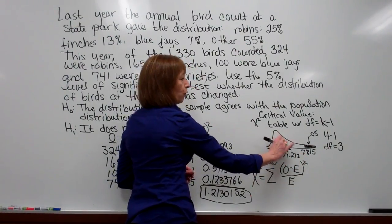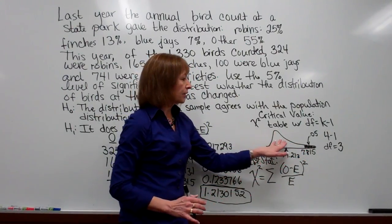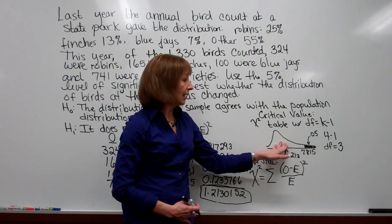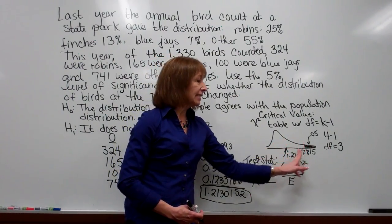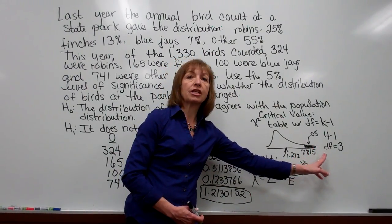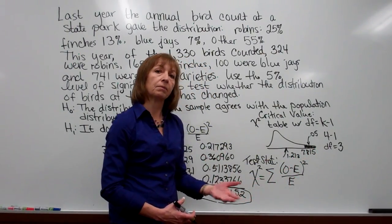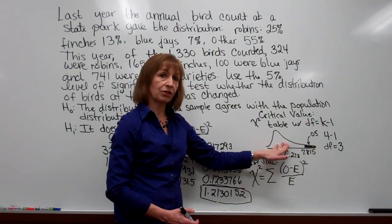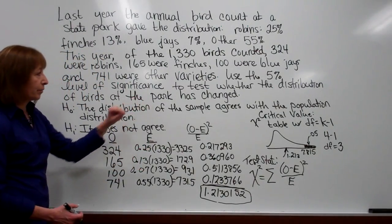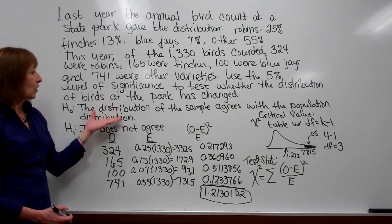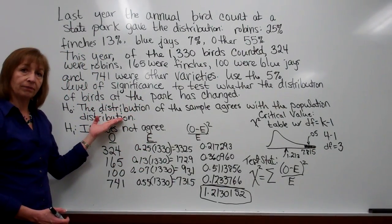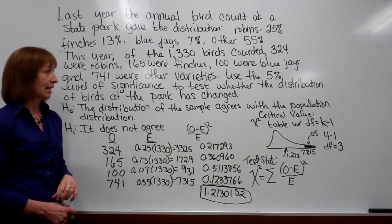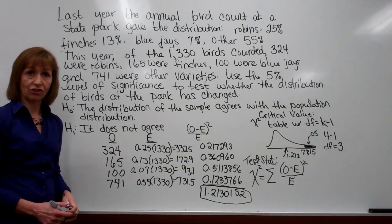And so it's under the open area, so it's under the area where you cannot reject the null. We would need to have a test statistic that would come out under the shaded region to say that we would be able to reject the null. But here it's under the open area, so we cannot reject the null. So with this at a 5% level of significance, we cannot reject the null. So the data is not significant, we cannot reject the null. It's not significant for us to say that the distribution has changed.